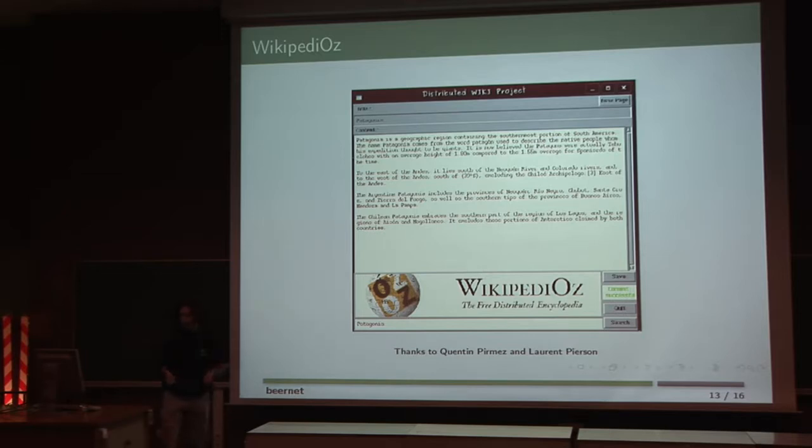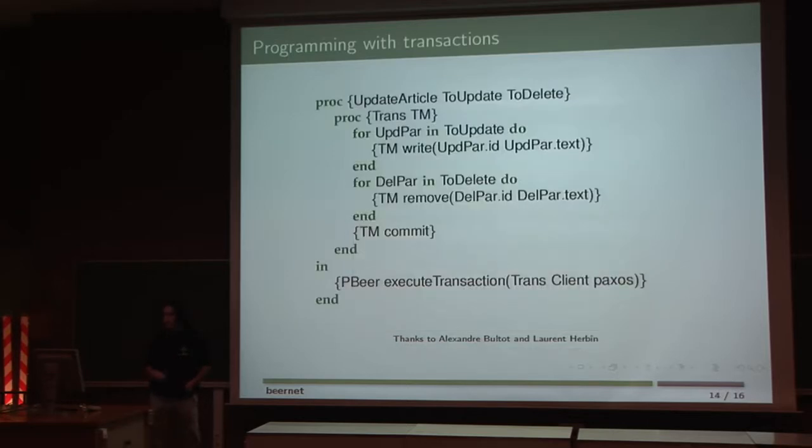There's not that much code for doing an update with transaction and replication. To summarize, BeerNet mixes the word peer and beer, because it's peer-to-peer, using beers, because beer are a known mean for achieving relaxation. Why relaxation? Because we use a topology which is called the relaxed ring.